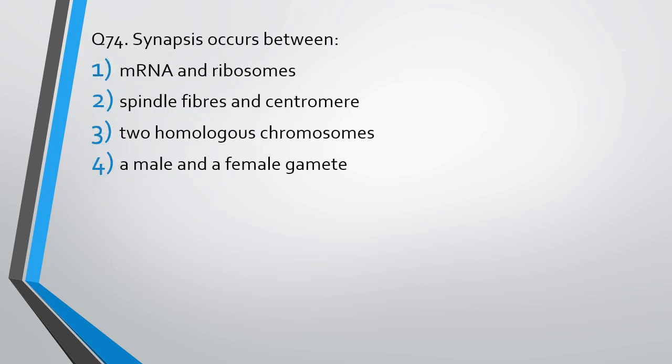Question number 74: Synapsis occurs between: mRNA and ribosomes, spindle fibers and centromere, two homologous chromosomes, or a male and female gamete? The correct answer is option 3 — synapsis occurs between two homologous chromosomes.